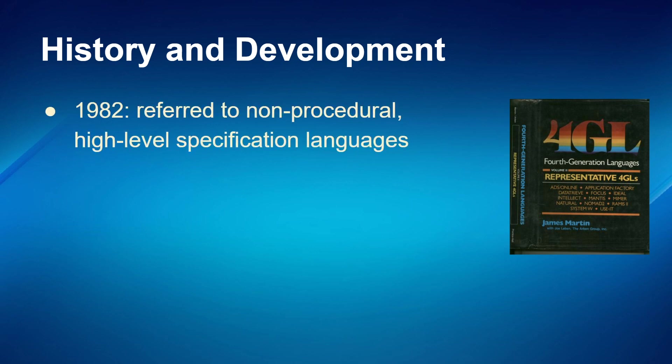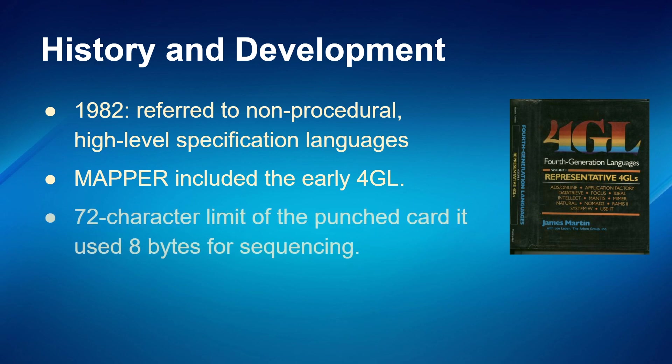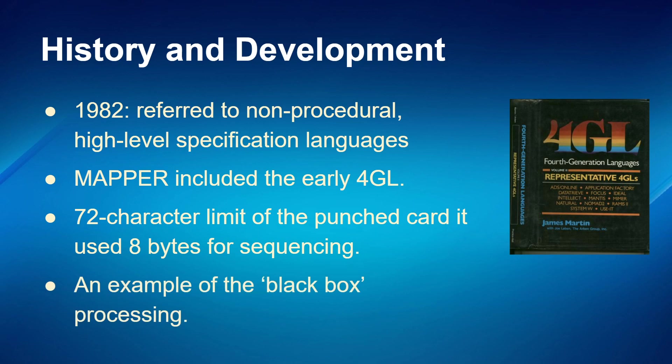1982 was referred to as a non-procedural, high-level specification language. This included a system called MAPA, which was an early 4GL. It used punch cards early on but has since moved on from there. This is an example of black box programming — you give it an instruction, it works out how to do it and does it all by itself.